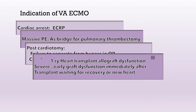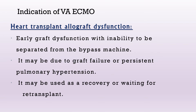The second indication is primary heart transplant allograft dysfunction. ECMO can be used in early graft dysfunction while waiting for recovery or a new heart. Post-heart transplant ECMO may be needed due to inability to separate from bypass, or due to graft failure or persistent pulmonary hypertension — used as a bridge to recovery or re-transplantation.